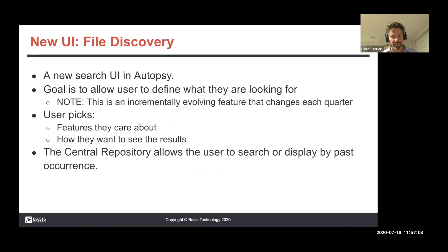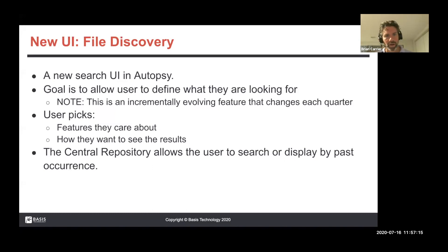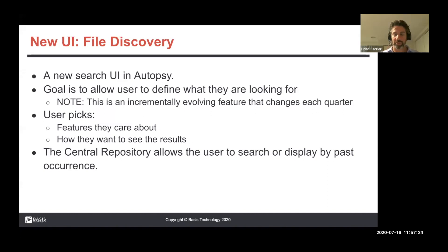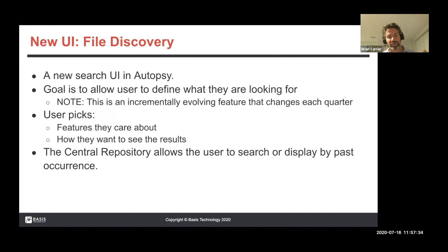To satisfy this, we have a new UI called File Discovery, which came out in the January release of Autopsy this past year. It's a search UI allowing users to define what they're looking for. Full disclosure — this is an incrementally released feature. I'm a big proponent of making small incremental releases, getting feedback, and learning, versus spending two years on something major and realizing it didn't quite work. So every quarter has been coming out with new features as we learn and apply things.